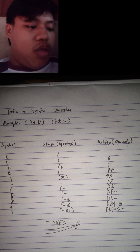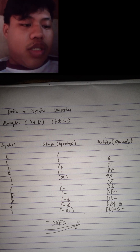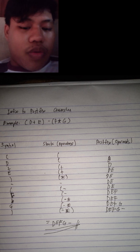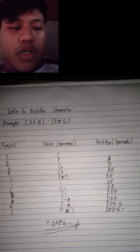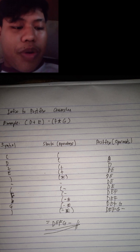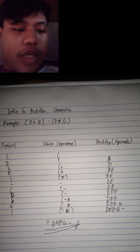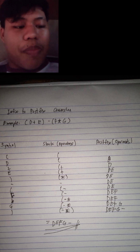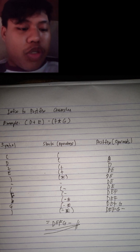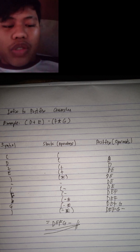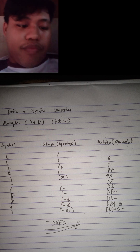The next line: you will put the multiplication sign in symbol. In the stack operators, you will also put the open parenthesis, minus, and multiply symbol. In postfix, you will put again D, E, and F.